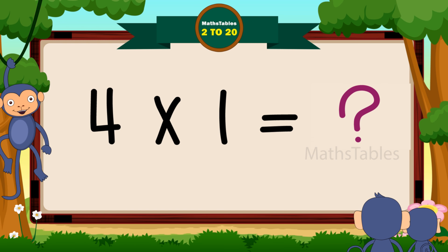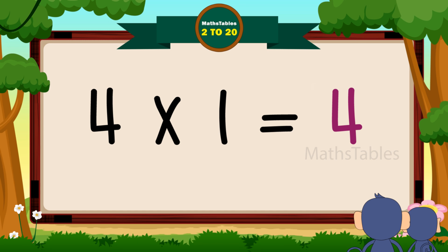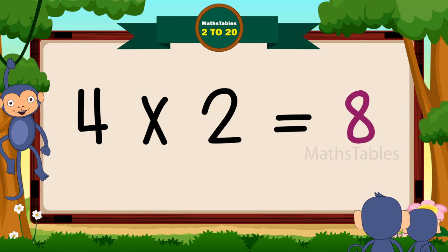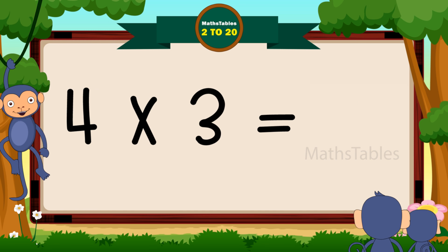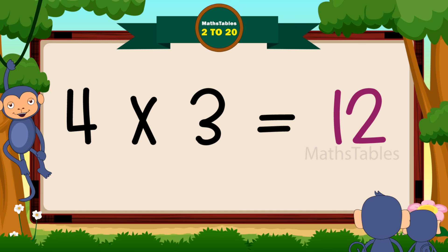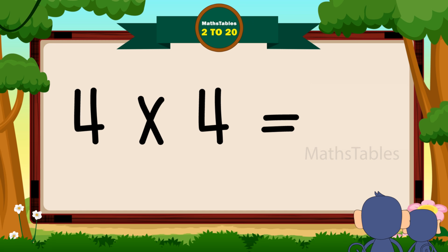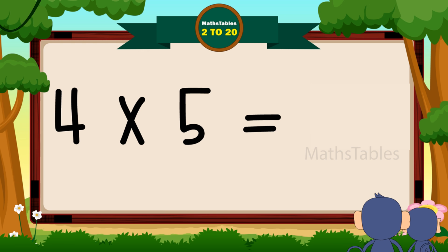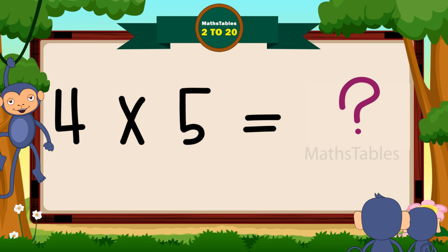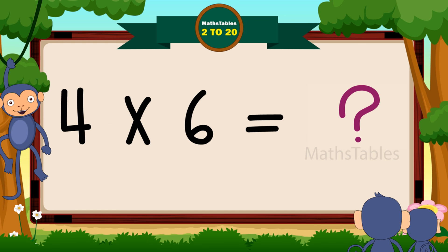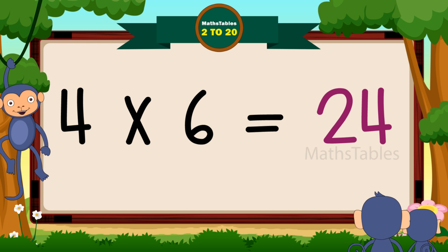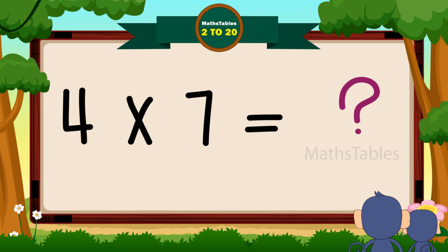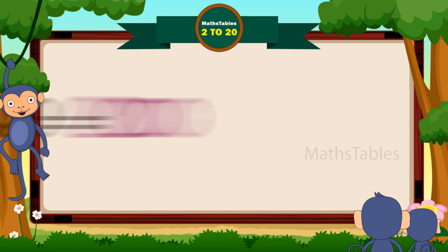Four ones are four. Four ones are four. Four twos are eight. Four threes are twelve. Four fours are sixteen. Four fives are twenty. Four sixes are twenty-four. Four sevens are twenty-eight.